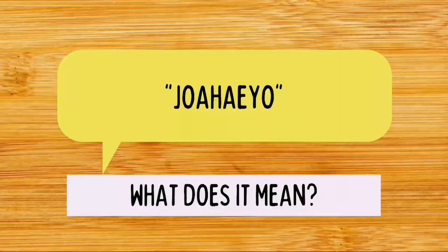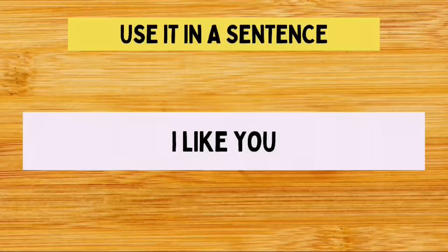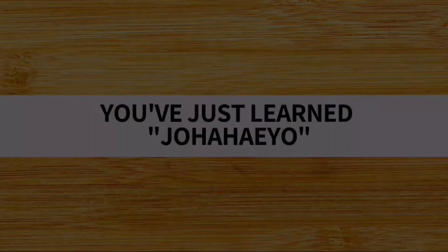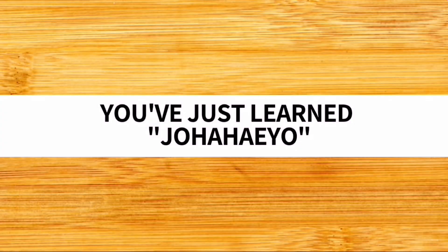Just like what we usually do to make it polite, we add yo to chowahe to make it chowayo. Again: chowahada is the root verb, chowahe is the present tense of chowahada, and chowayo is the polite form of chowahe. So looking back to the phrase shown at the beginning of the video, we already know that the meaning of chowayo is simply I like you. And with that, you've just learned chowayo.